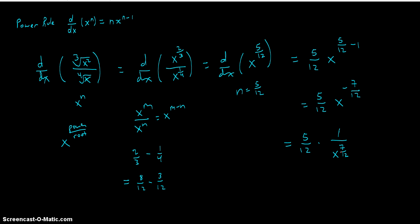And then a fractional power 7 over 12 is power over root. So 5 twelfths times 1 over the root is the twelfth root, and the power is the seventh power. So we have, putting them together, 5 over 12 times the twelfth root of x to the seventh. So that's our derivative.